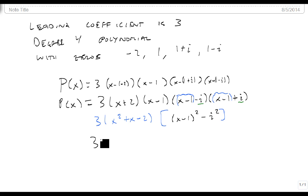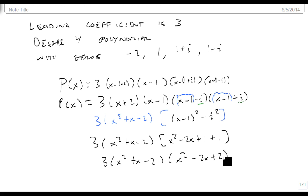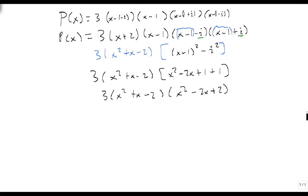Well that's 3 times x squared plus x minus 2, times x squared minus 2x plus 1, plus 1. That's what i squared is - minus 1, so minus a minus 1 gives us 3 times x squared plus x minus 2, times x squared minus 2x plus 2.